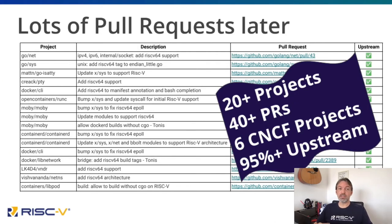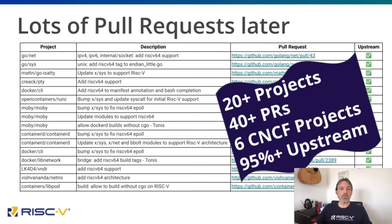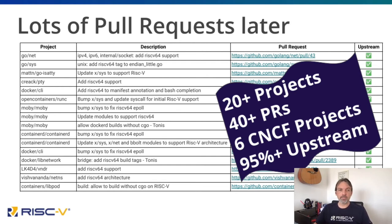Getting to this point was not easy. Over the past few months, the community has been submitting many PRs to open source projects, bringing them to support the RISC-V architecture. One big milestone was last year when Go was upstreamed and able to run and build binaries for this new architecture. Then, more than 20 projects were patched and more than 40 PRs were sent, where most of them are already upstream. Base projects ranging from Docker, RunC, Containerd, and Kubernetes itself, Prometheus and others, including support libraries required by them.